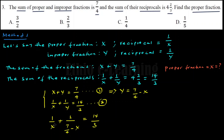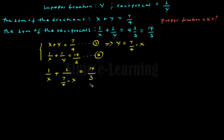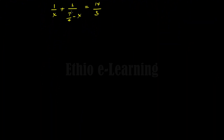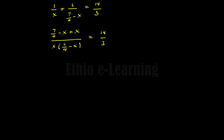After cross-multiplying and simplifying: (7 over 4 minus x) plus x over x times (7 over 4 minus x) equals 14 over 3. Expanding: negative x squared plus 7 over 4 times x is equal to 14 over 3.